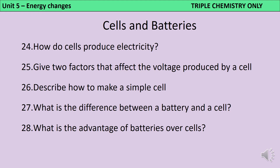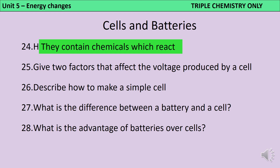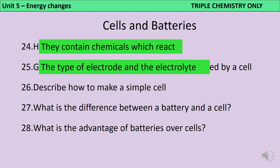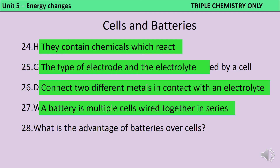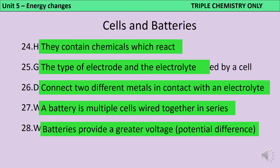Chemical cells contain chemicals which undergo chemical reactions to produce electricity. Two factors that will affect the voltage produced by a cell are the different metals that have been used to make the electrodes and the electrolyte that they're submerged in. A simple cell can be made from two different metals that are wired together and are in contact with an electrolyte. A battery is the name we give to multiple cells that have been wired together in series, and the reason we do this is to produce a greater voltage, which we can also call potential difference.